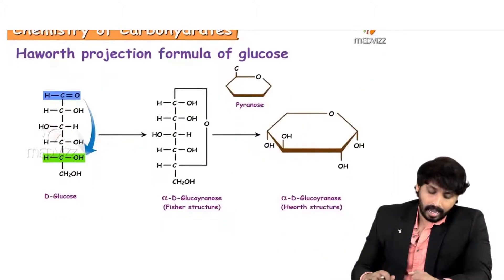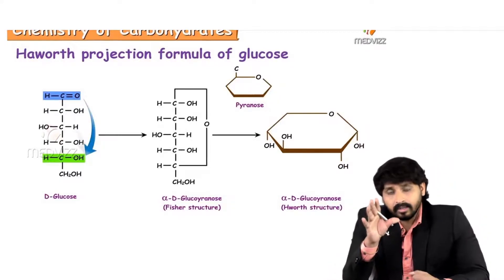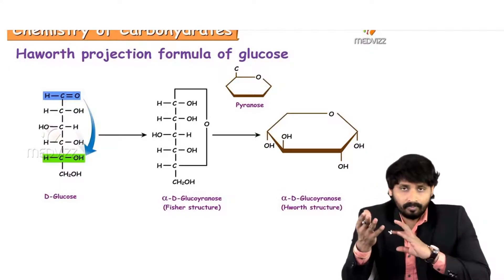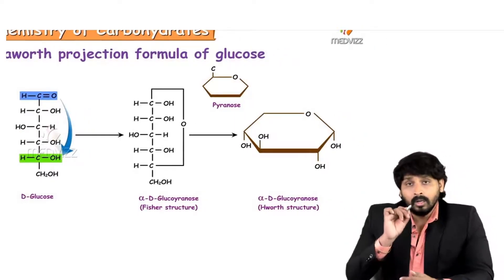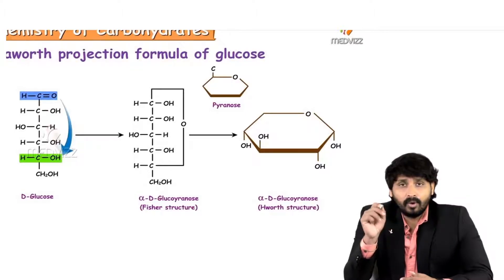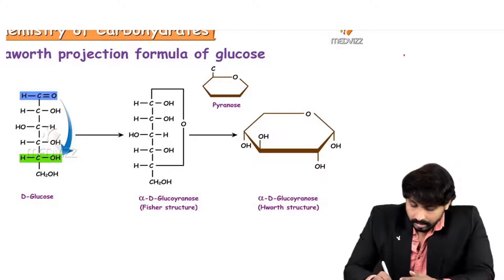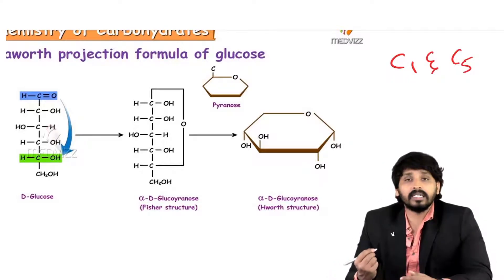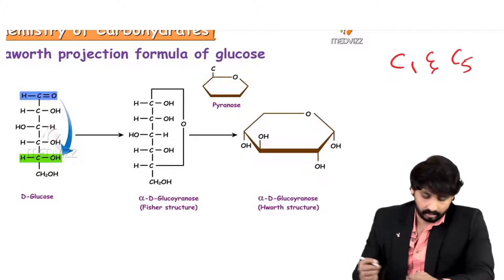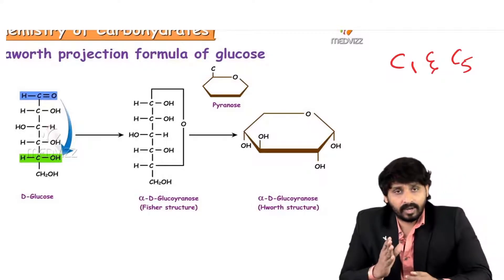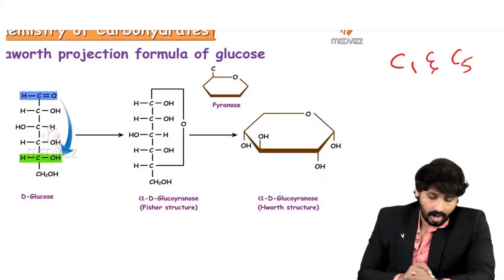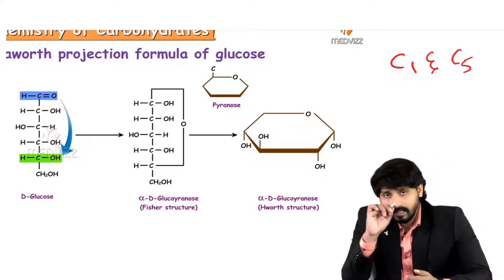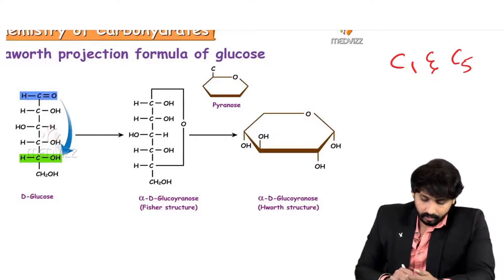In the Haworth projection formula, glucose exists in ring form rather than straight chain. To convert the straight chain into ring form, there should be an oxide linkage between C1 and C5 carbons. The green color marks C5 and the blue color marks the first carbon, which is the aldehyde group. There is the oxide linkage, and this straight chain glucose is converted to glucopyranose.